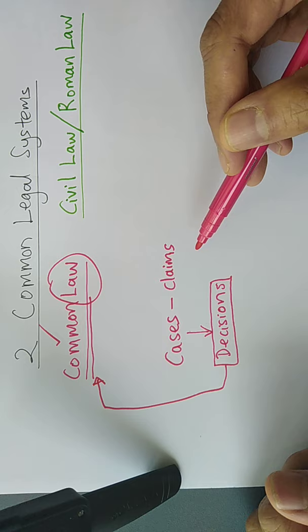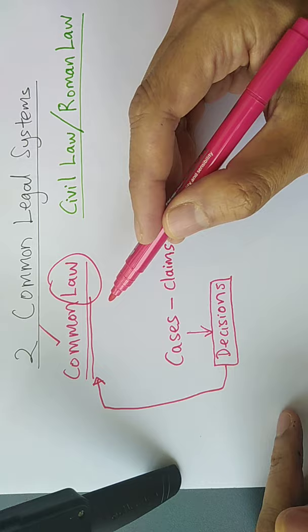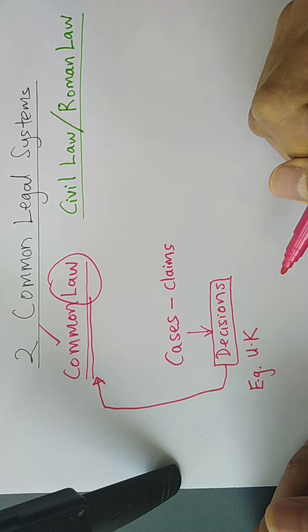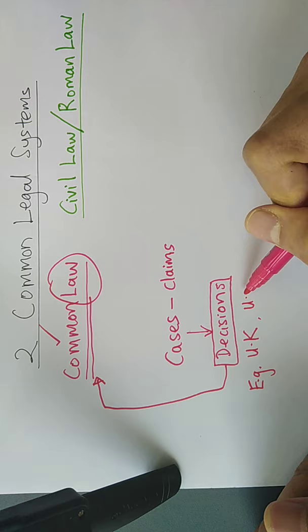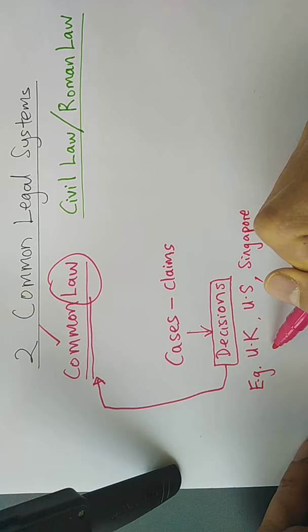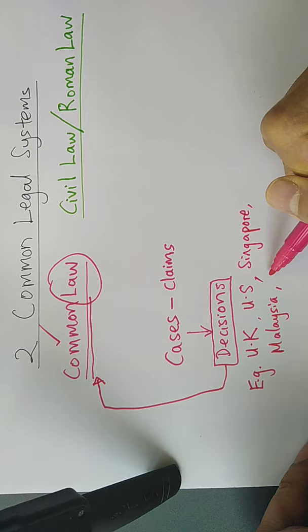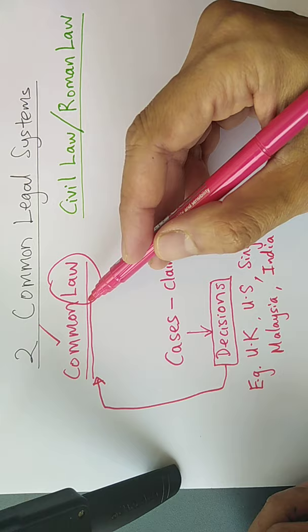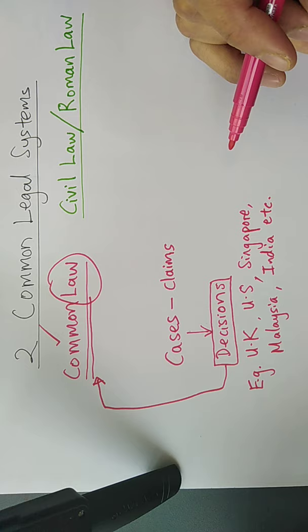The countries that adopt this kind of legal system, for example the UK. The UK is the original source of this kind of legal system. And of course the other countries that used to be the colonies of the UK - the United States, Singapore, Malaysia, India, Kenya, all these other places that used to be colonies of the UK. They all have the origins in this kind of system, common law - law made from decisions of cases put forward by people.